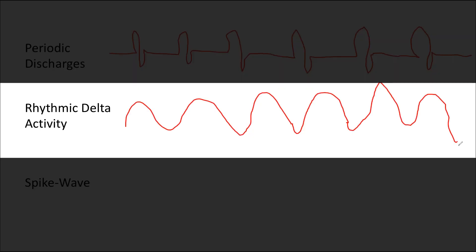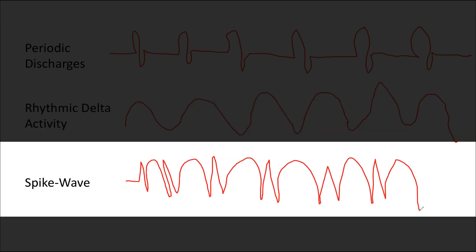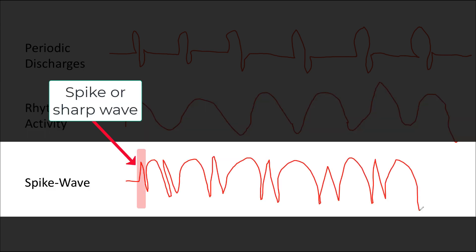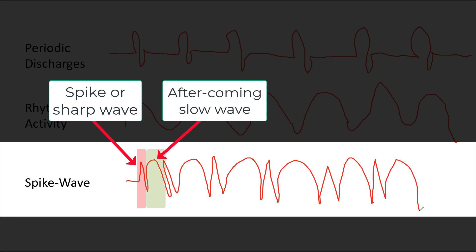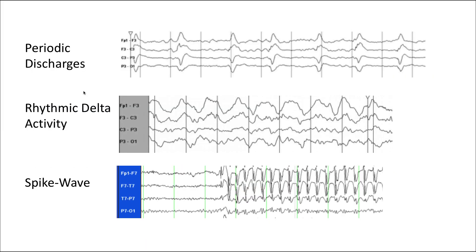Rhythmic delta activity consists of activity in which there is no inter-discharge interval. Here is an example of a very sinusoidal rhythmic delta activity. Spike or sharp wave activity has a spike or a sharp wave that precedes or is associated with each waveform that follows it. Again, there is no inter-discharge interval. We can look at real-life examples of periodic discharges, rhythmic delta activity, and spike wave activity to illustrate the difference.